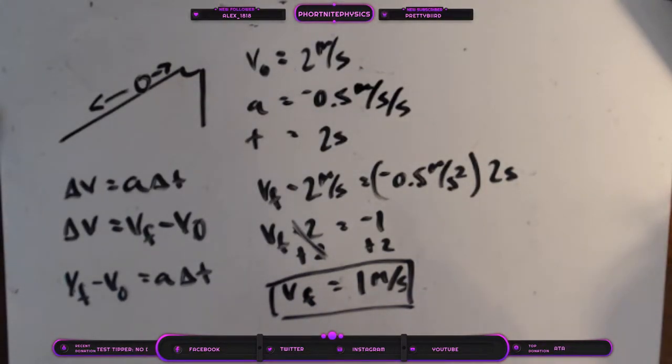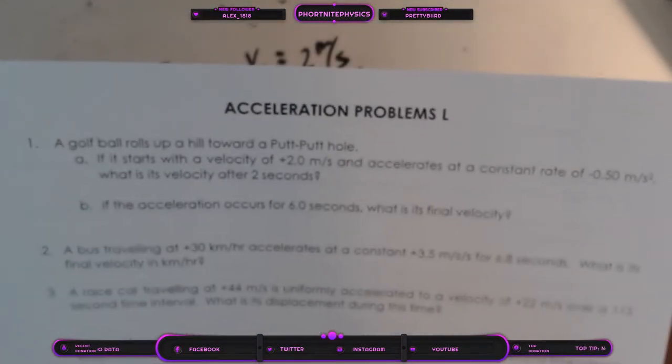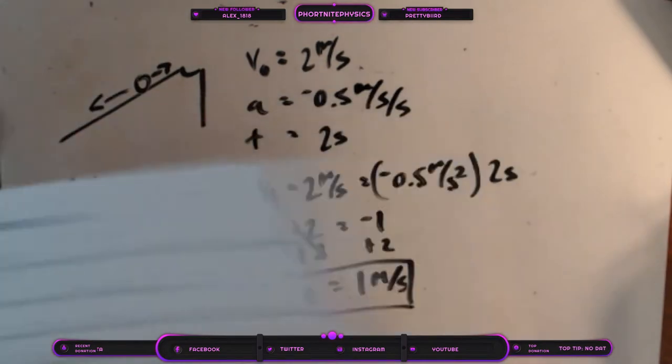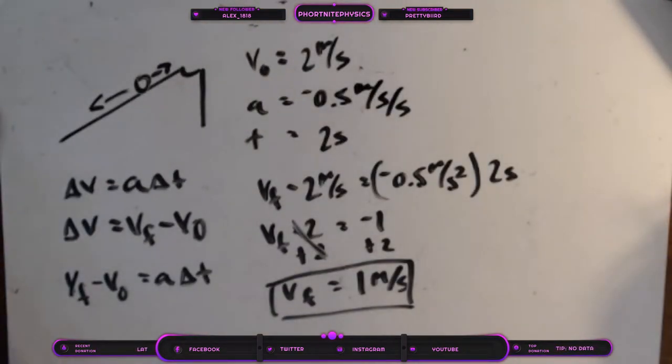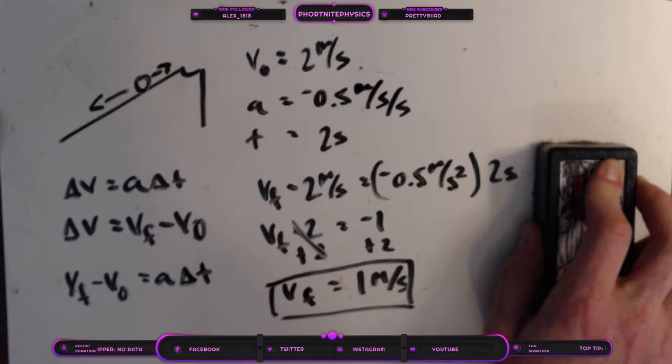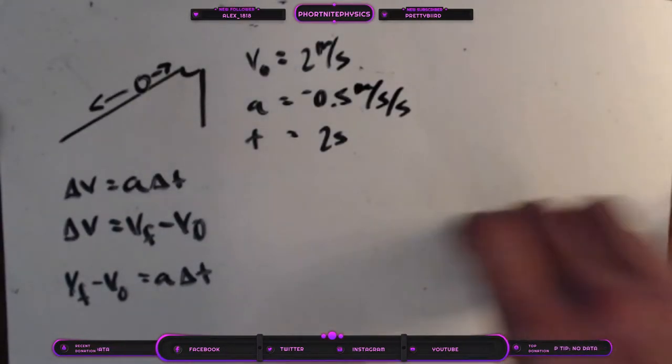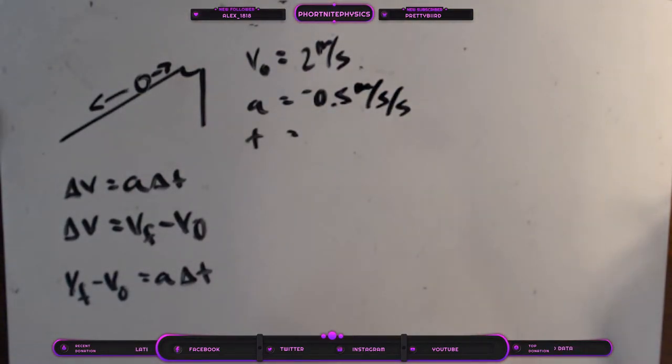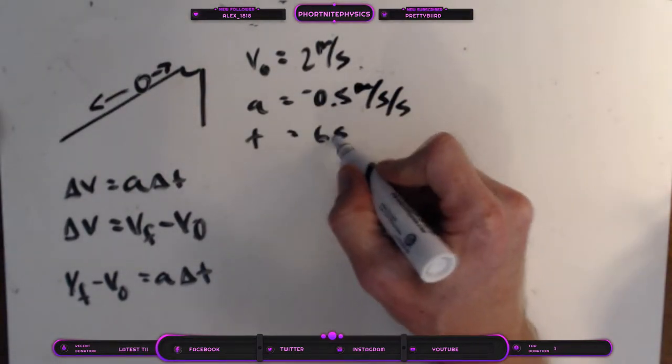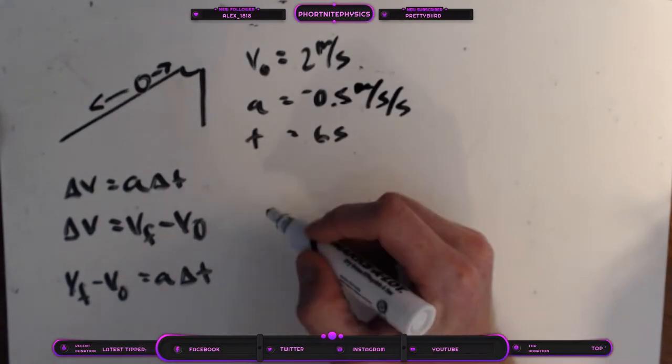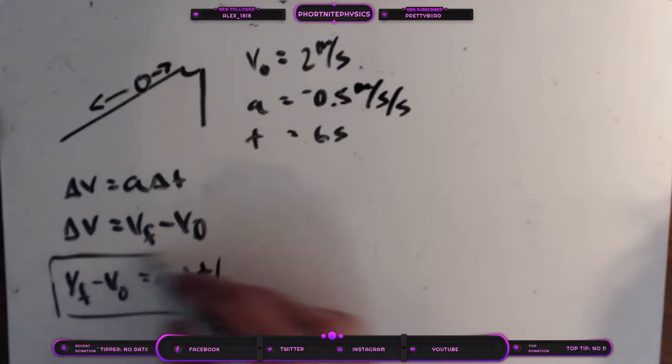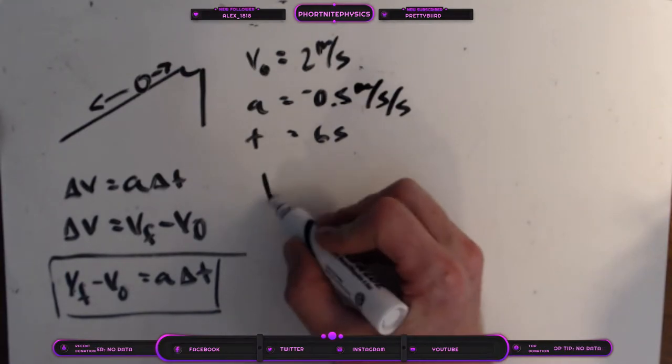Now let's go ahead and finish off the second part of that problem, which is if the acceleration occurs for 6 seconds, what is its final velocity? Now let's go ahead and erase this work that we've done here already. And we're going to change our time. So 6 seconds.